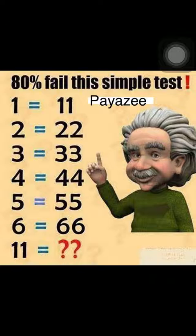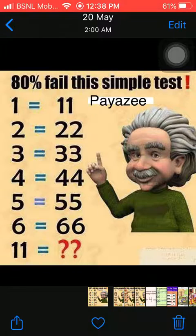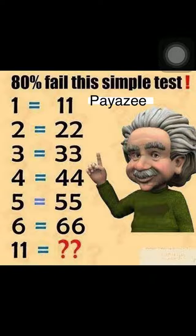What do you think the value will be? There are two logical answers. The first solution is very simple: one equals eleven, so if you multiply one by eleven it gives you eleven. Similarly, for all values on the left side, multiply by eleven to get the solution. So eleven multiplied by eleven equals one hundred and twenty-one. This is a simple and logical answer.